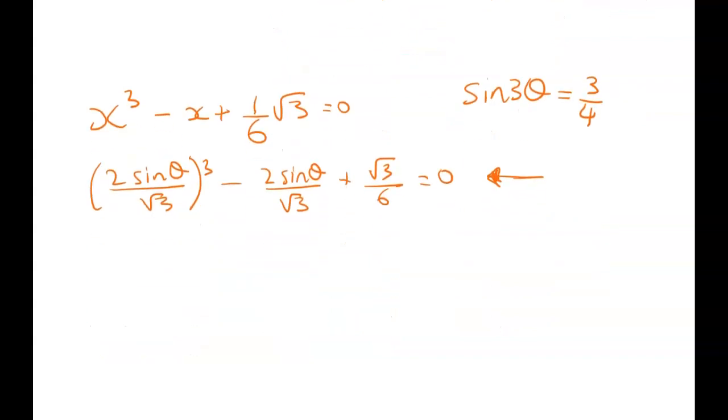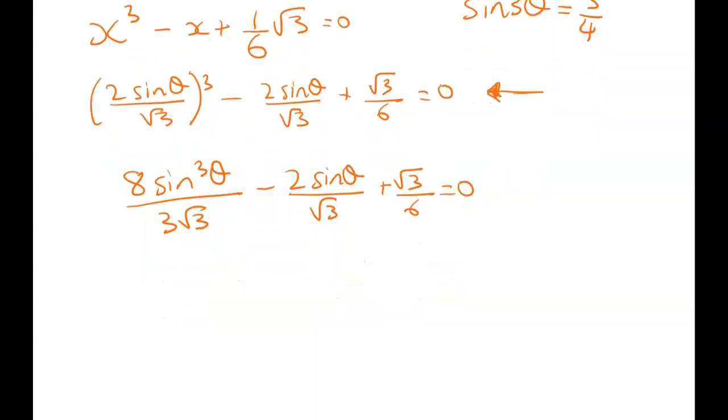Let's just expand out and then look at what common denominator might make most sense. We get eight sine cubed theta over three root three minus two sine theta over root three plus root three on six is equal to zero. So I saw quite a lot of smart thinking about this. My preferred thing here is just to whack it into a lowest common multiple and I'm going to go with six root three.